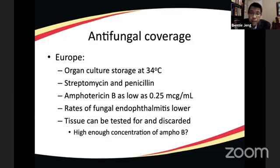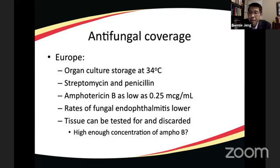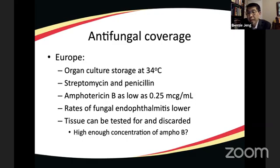In Europe and other places using organ culture storage at 34-37 degrees Celsius, antibiotics and amphotericin are generally included at concentrations as low as 0.25 micrograms per ml. The rate of fungal endophthalmitis from tissue used in organ culture is lower — though this may be because tissue found to be contaminated can be discarded rather than released, rather than purely due to the antifungal. It raises the question: does adding amphotericin reduce the number of corneas that become discarded due to contamination? That's something we should look into.